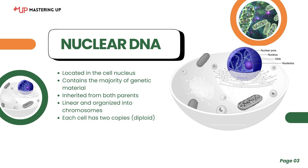Let's take a closer look at nuclear DNA, often referred to as nDNA. This is the main type of DNA found in our bodies, and it is located right in the center of the cell, in a special compartment called the nucleus. Think of the nucleus like the brain of the cell, where all the important instructions are stored. Nuclear DNA contains the majority of our genetic material — over 99% of it, actually. That means almost everything about how we look, how our bodies function, and even our risk of certain diseases is encoded in this DNA.